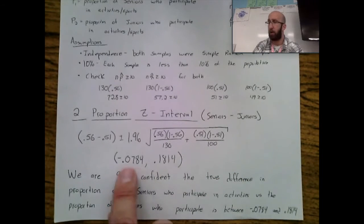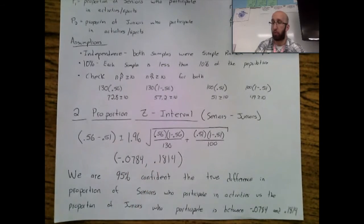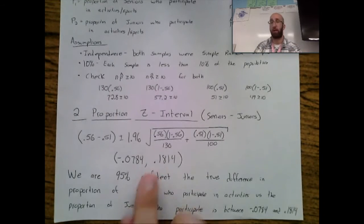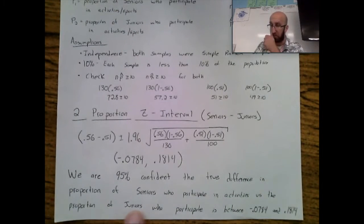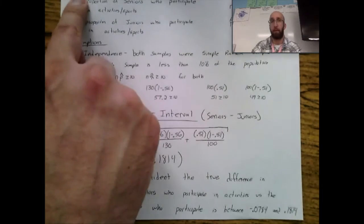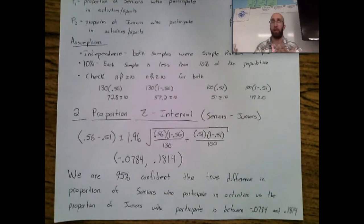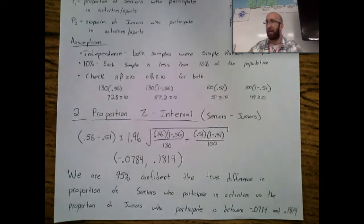The calculator gives the interval: negative 0.0784 to positive 0.1814. For context — the final step in PANIC — we are 95% confident the true difference in the proportion of seniors who participate in activities versus the proportion of juniors who participate is between −0.0784 and 0.1814. This estimates what that gap between P1 and P2 actually is.